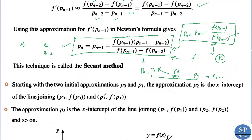Starting with the two initial approximations P0 and P1, the approximation P2 is the x-intercept of the line joining the points (P0, f(P0)) and (P1, f(P1)). Then P3 is the x-intercept of the line joining (P1, f(P1)) and (P2, f(P2)), and so on. That means each successive approximation is the x-intercept of the secant line through the two most recent points.